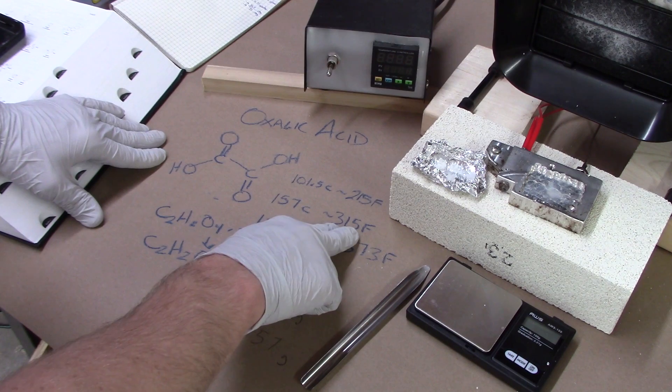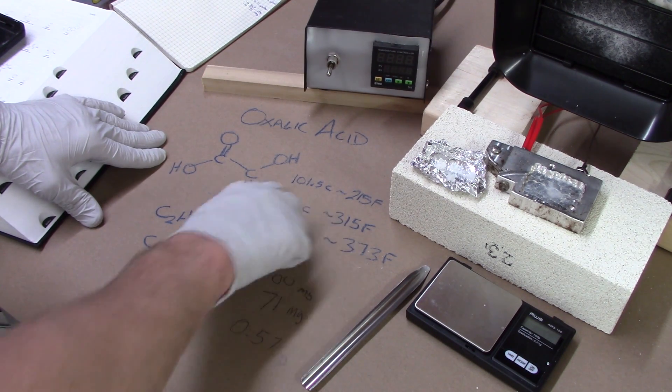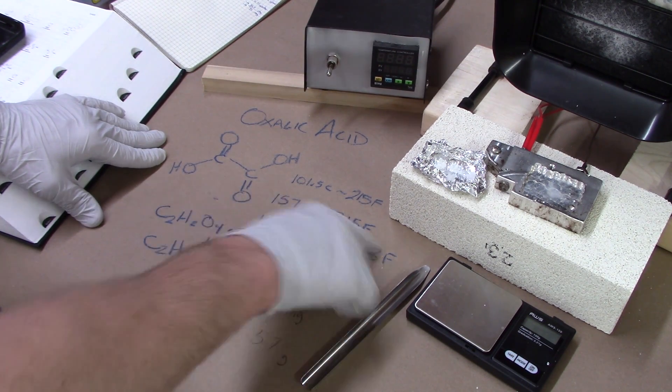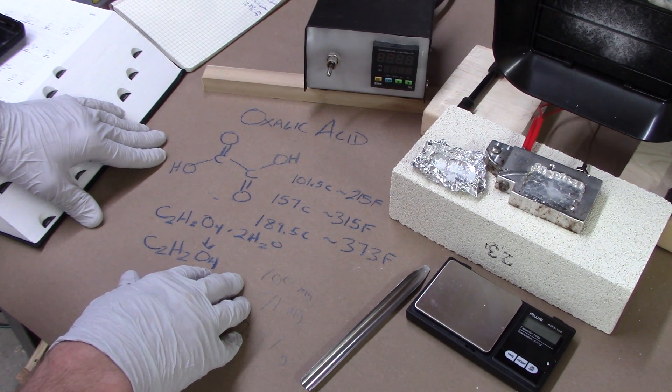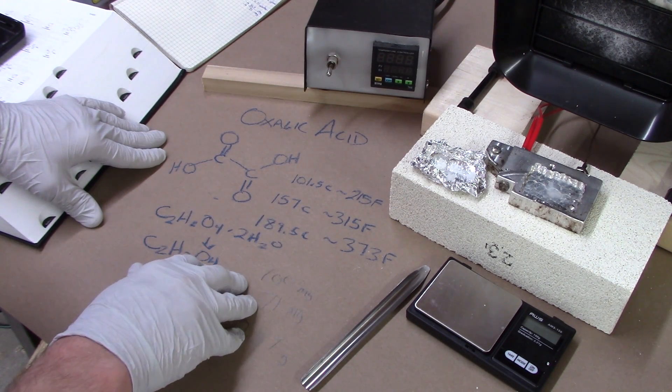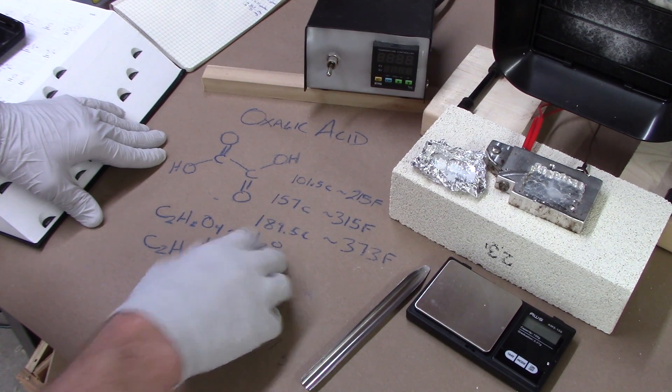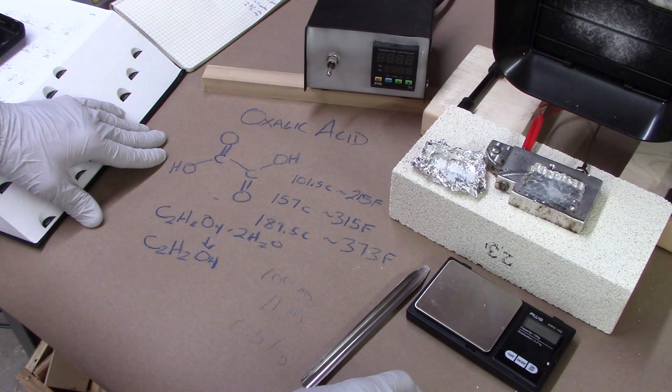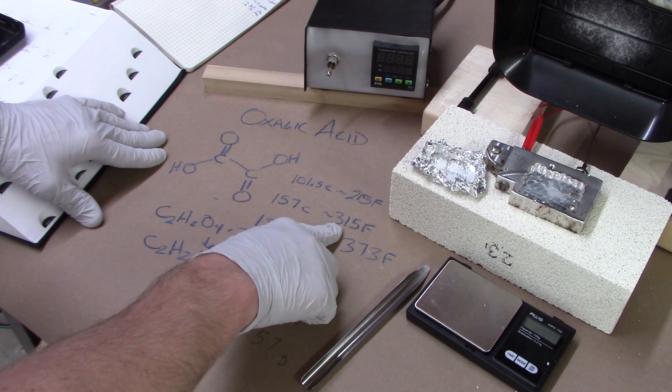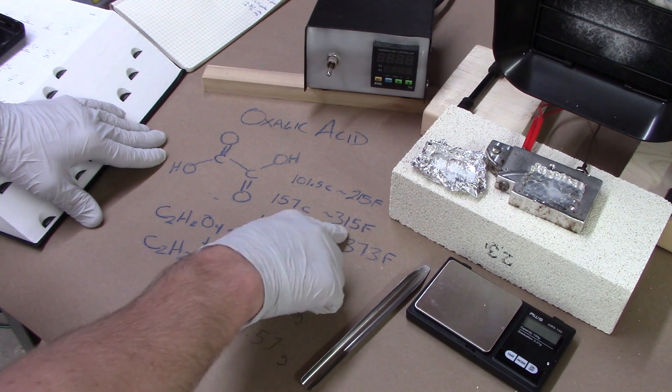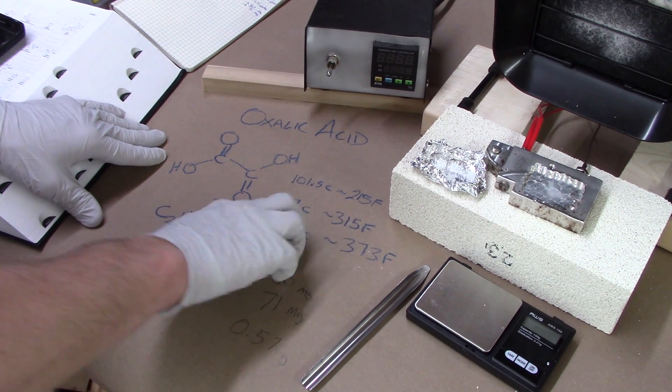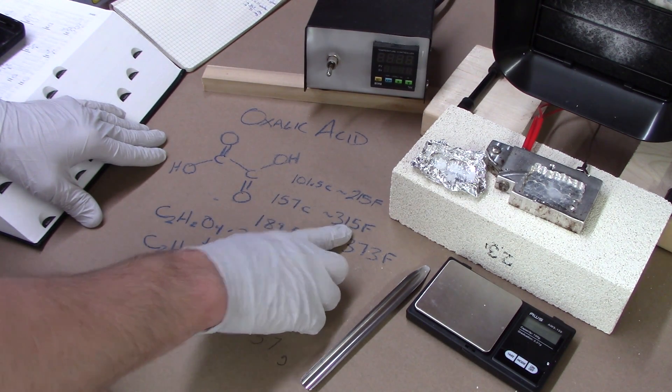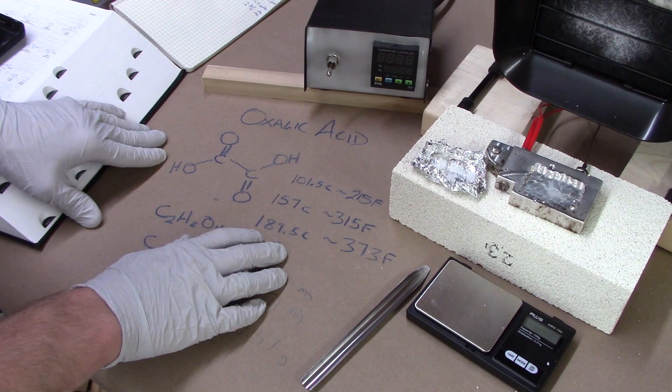Next, 315 Fahrenheit, this 157 degrees sublimation point that you see in literature everywhere, that's boiling point. I think that's boiling point. You can clearly see vapors coming off as low as 260 Fahrenheit. So this must be the temperature at which the vapor pressure is as high as atmospheric, so the definition of boiling point. You don't need to get this hot to vaporize oxalic acid.